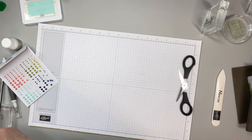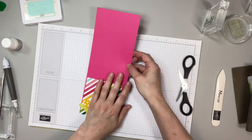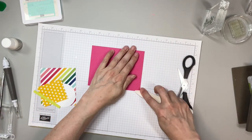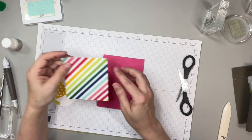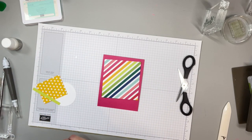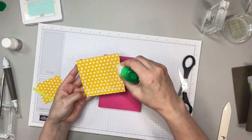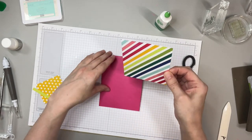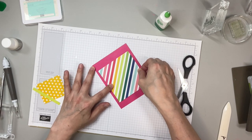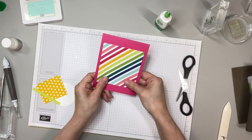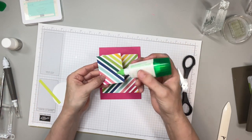And then our last one is going to be a Melon Mambo card base. I'm going to leave the grid paper here because we're going to have to do some more painting. So we have our A2 Melon Mambo card base, and then our striped piece is three and a quarter by four. And then our star piece is two and a quarter by two and three quarters.